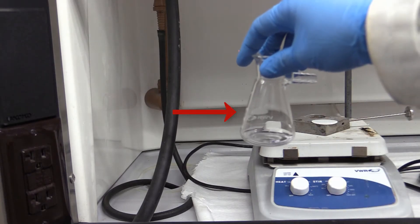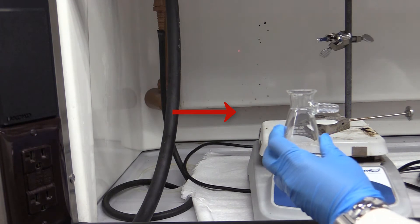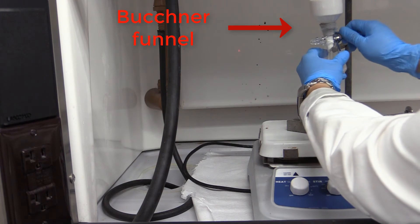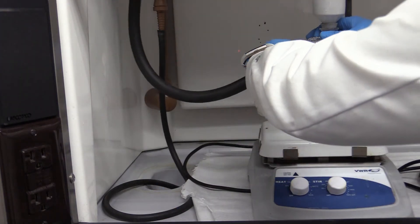When you are ready to filter, grab the filter flask and the Buchner funnel. Clamp the flask into the stand so it doesn't fall over while you are filtering. Attach the black rubber hose from the vacuum to the arm of the filter flask.